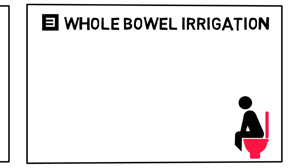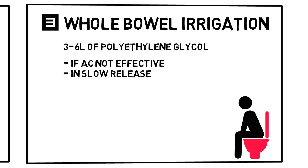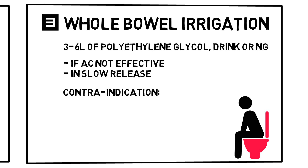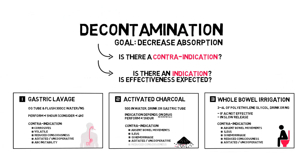Whole bowel irrigation is used when there are drugs involved that don't bind to activated charcoal, or with slow-release preparations. It decreases the transit time of the ingested drug. It is performed by ingesting 3 to 6 liters of polyethylene glycol, either by having the patient drink this or by a nasogastric tube. Contraindications are the same as for activated charcoal: absent bowel movements or ileus, or gastrointestinal hemorrhage. As the volume load is much higher, it should not be performed in unconscious or uncooperative patients — consider intubating if necessary.